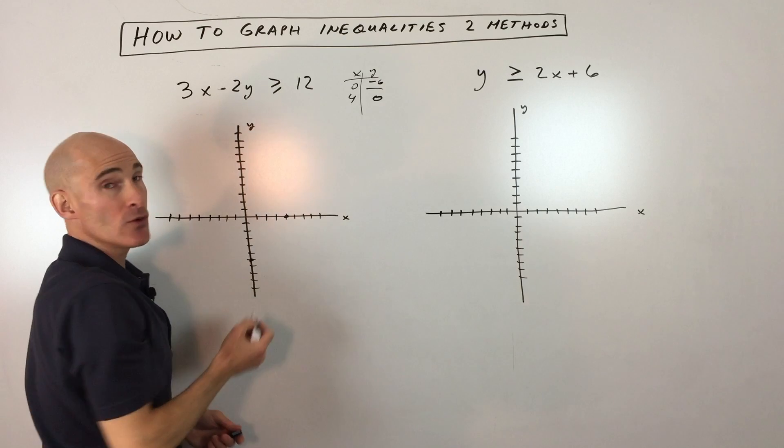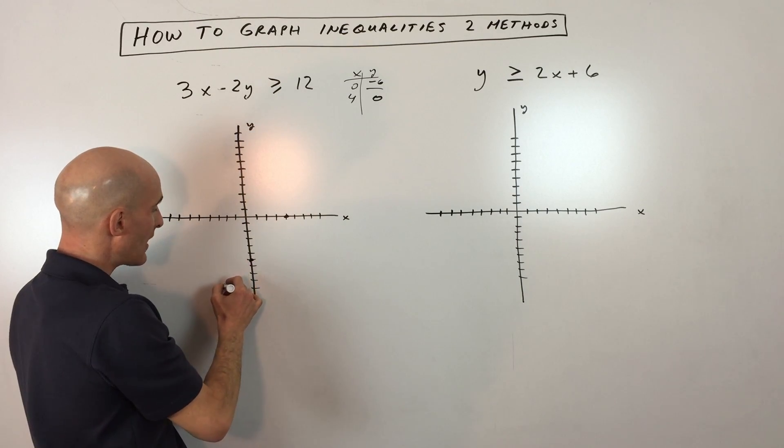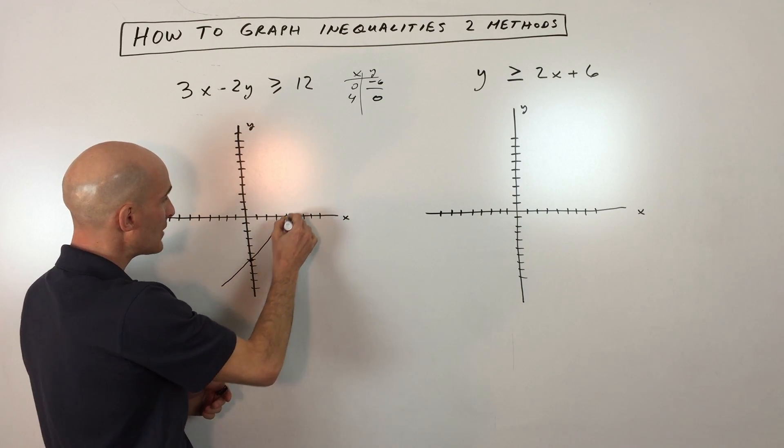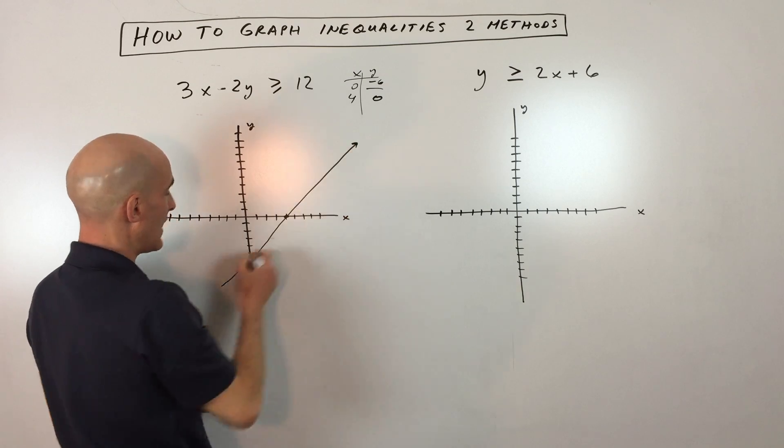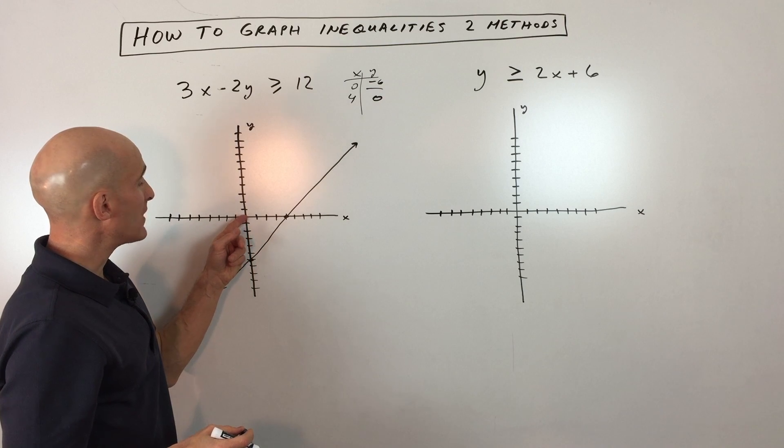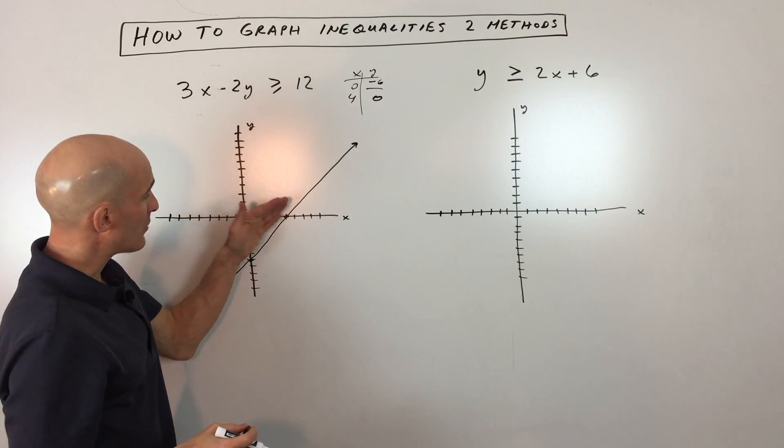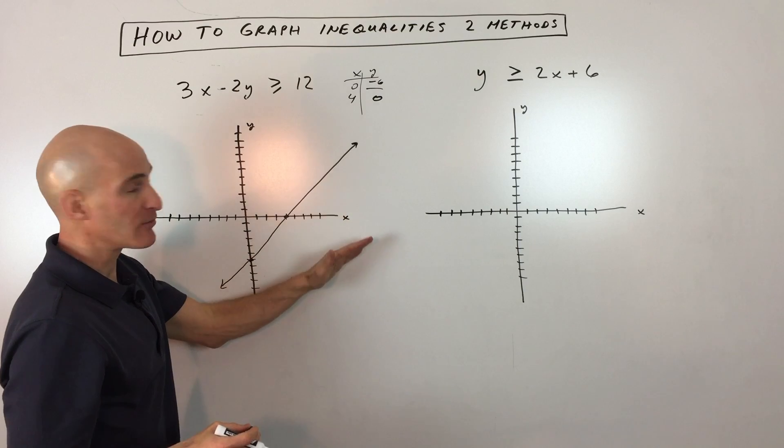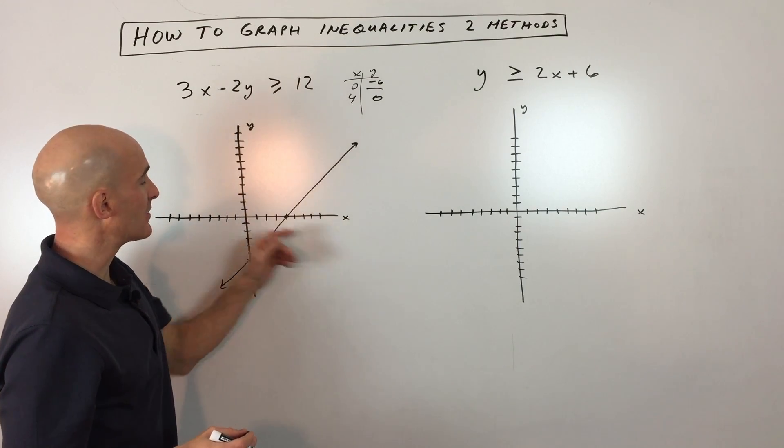It's greater than or equal to. Equal to means it's going to be a solid line. If it was greater than but not equal to, it would be a dotted line, or dashed line, meaning it doesn't include the points on the line. And then what you want to do is you want to pick a test point either on this side of the plane or this side of the plane, okay, you know, this side of the line or this side of the line.